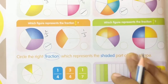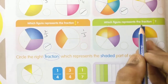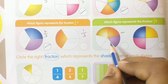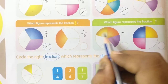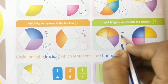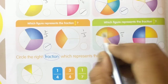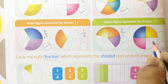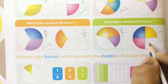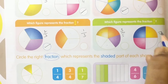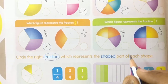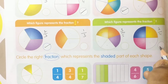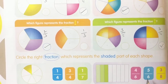Come to the next one. Which figure represents the fraction 3 by 4? First figure: 1, 2, 3, 4, 5 parts — 1, 2, 3 are shaded, so the answer is 3 by 5. Same process for the next: count 1, 2, 3, 4 — total 4 parts — 3 are shaded. We got 3 by 4 here. So keep tick mark for 3 by 4.